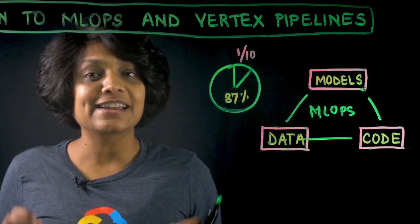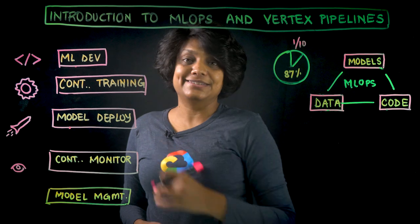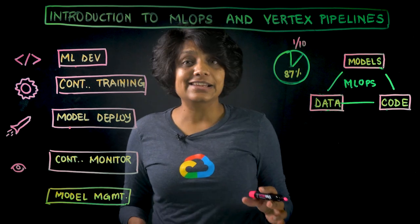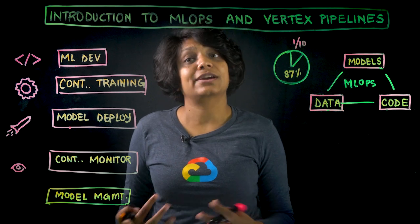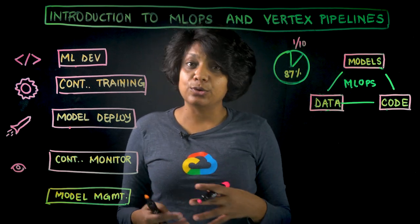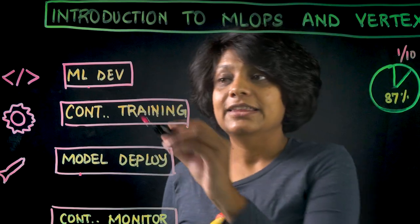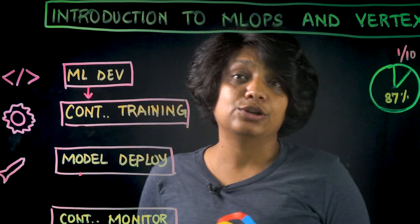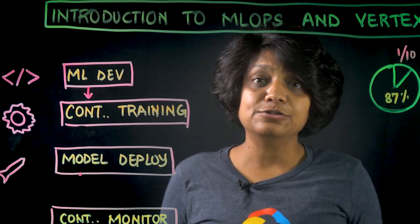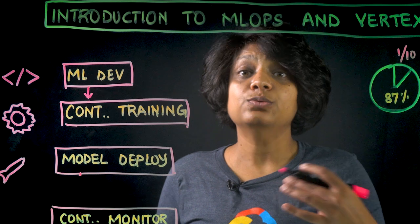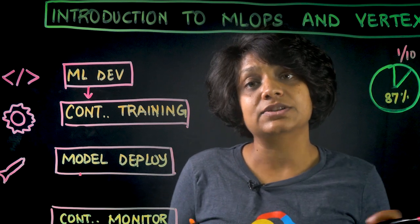Let's start with a high-level MLOps framework. The first step is ML development, which is inherently experimental, where data scientists and model builders explore and transform the datasets, explore different algorithms, train many models, and then compare them. The second step is continuous training. Production training should be automatable and repeatable so it can take new data or other triggers and generate new and better models on demand.